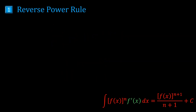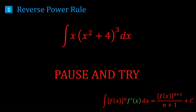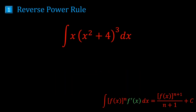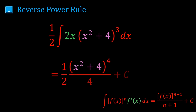For the next example, you should pause the video and attempt it yourself. We see x²+4 raised to some power. The derivative of x²+4 is 2x. We almost have 2x being multiplied, but we just need to multiply and divide by 2. And now we do have 2x being multiplied. So the answer is ½ · (x²+4)⁴ on 4, or (x²+4)⁴ on 8.